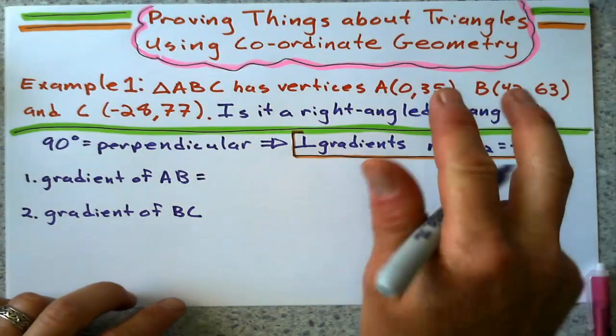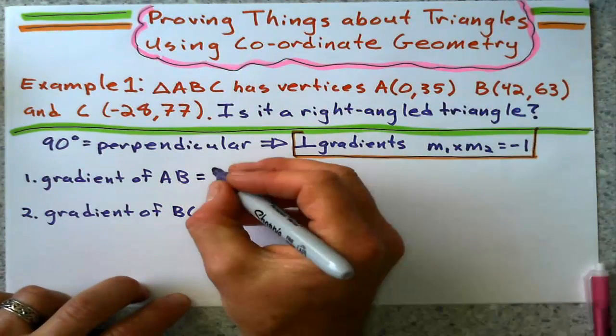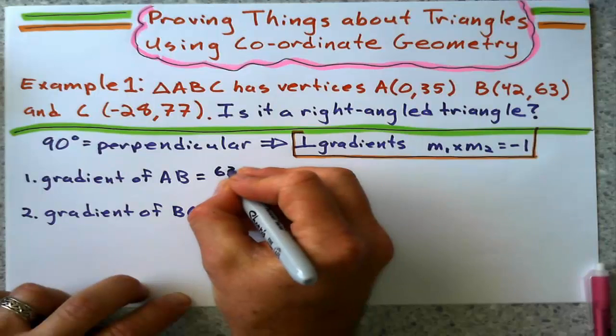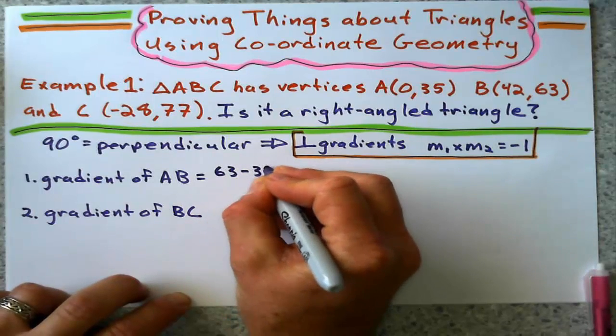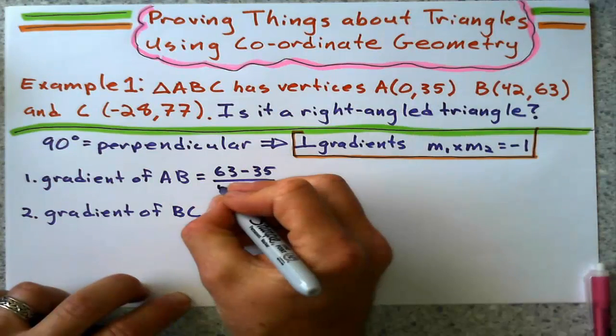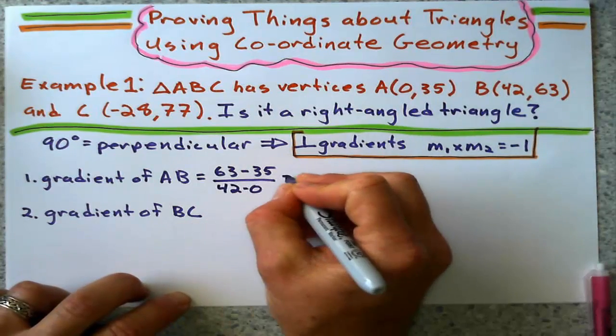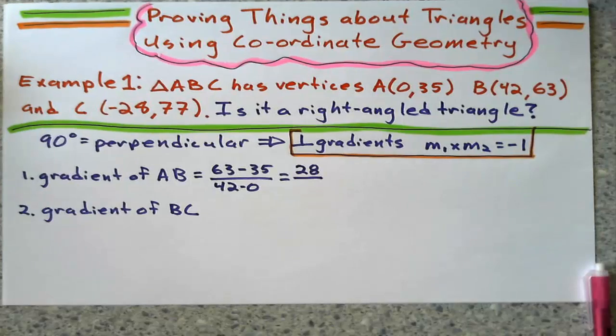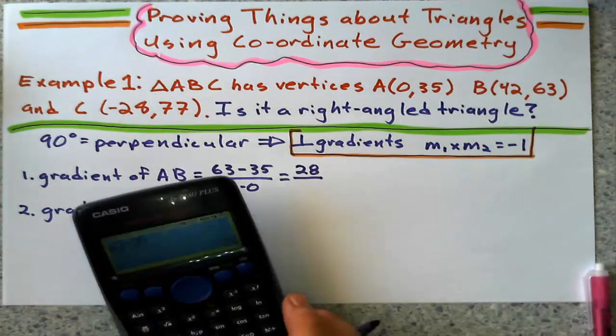Gradient of AB, rise over run, change in Y. 63 minus 35 over 42 minus 0. What does that gradient give me? And 42 minus 0, hold on, let me use a calculator on that. It's 42.